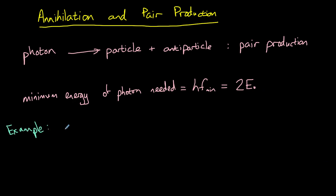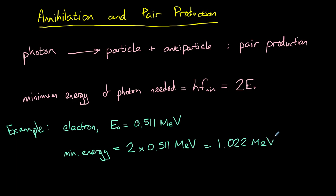For example, an electron has a rest energy of 0.511 megaelectron volts. What is the minimum energy of a photon required to produce an electron-positron pair? We know that the minimum energy of a photon is twice the rest energy, so therefore the minimum energy is equal to 2 times 0.511 megaelectron volts, giving us a rest energy of 1.022 megaelectron volts. Or in joules, this is 1.64 multiplied by 10 to the power of minus 13 joules.